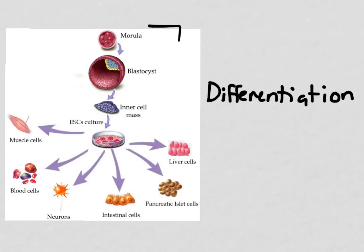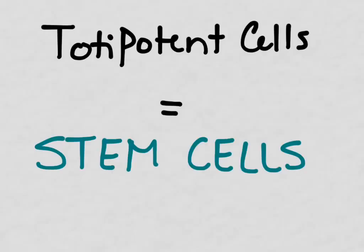Remember, the cells in the first few stages are able to transform into any kind of cell, but you could never take a liver cell and change it into a neuron. You may have heard of totipotent cells under another name. Totipotent cells can also be called stem cells.